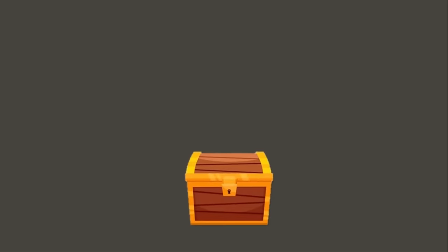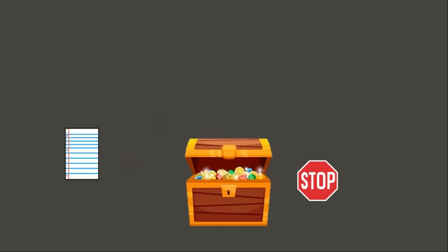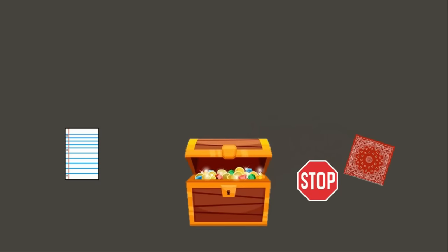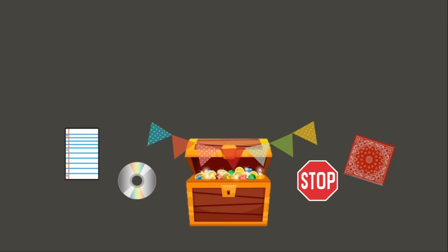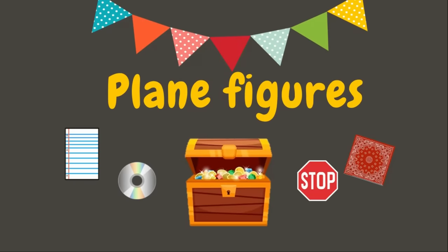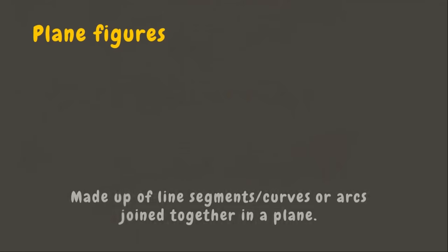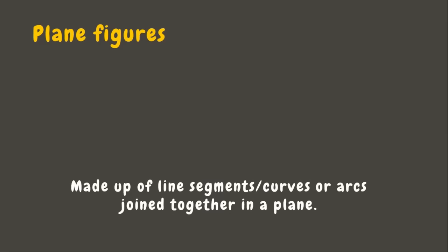Let's go and have a treasure hunt — let's find out what's inside this treasure. We have a stop sign, a piece of paper, a handkerchief, and a compact disc. These objects represent plane figures.